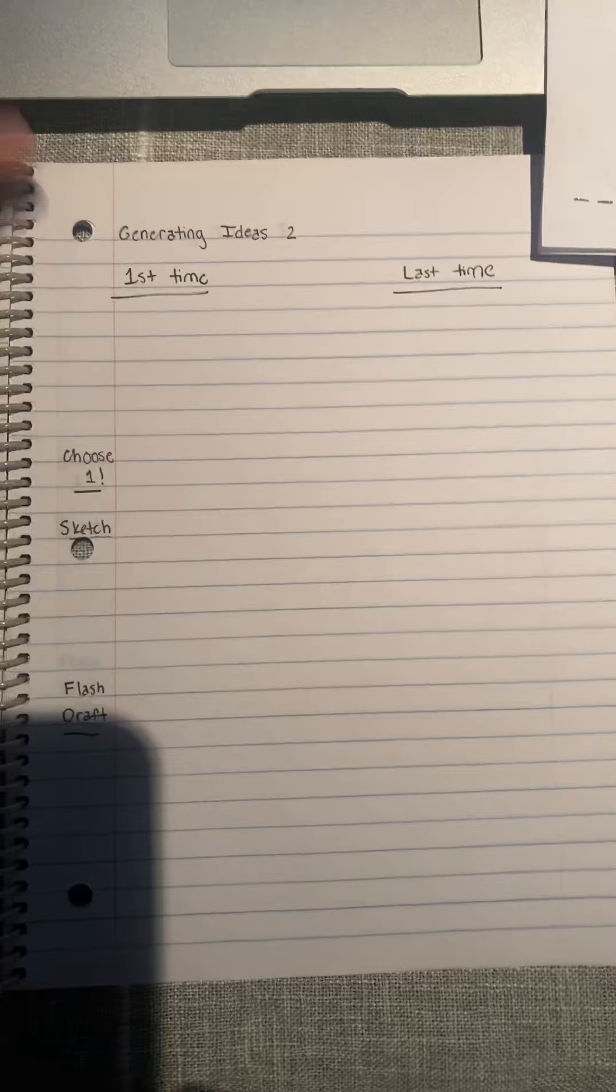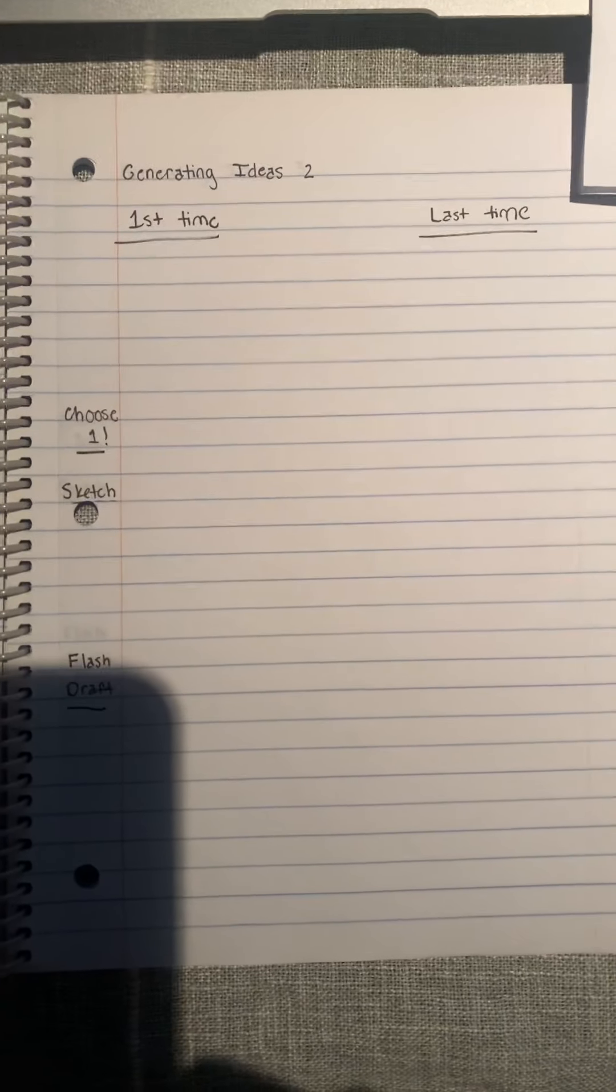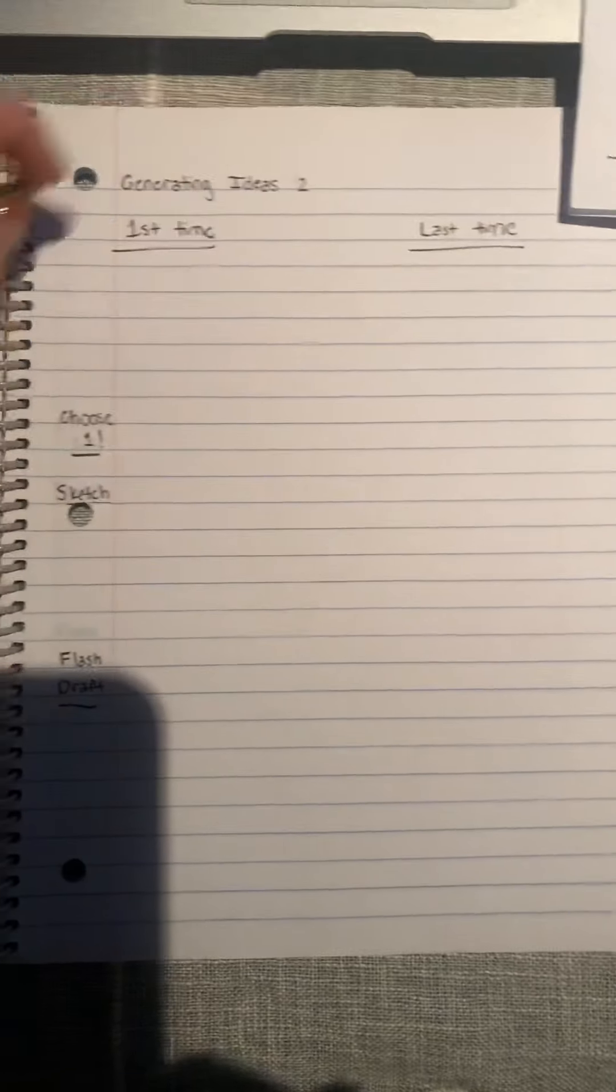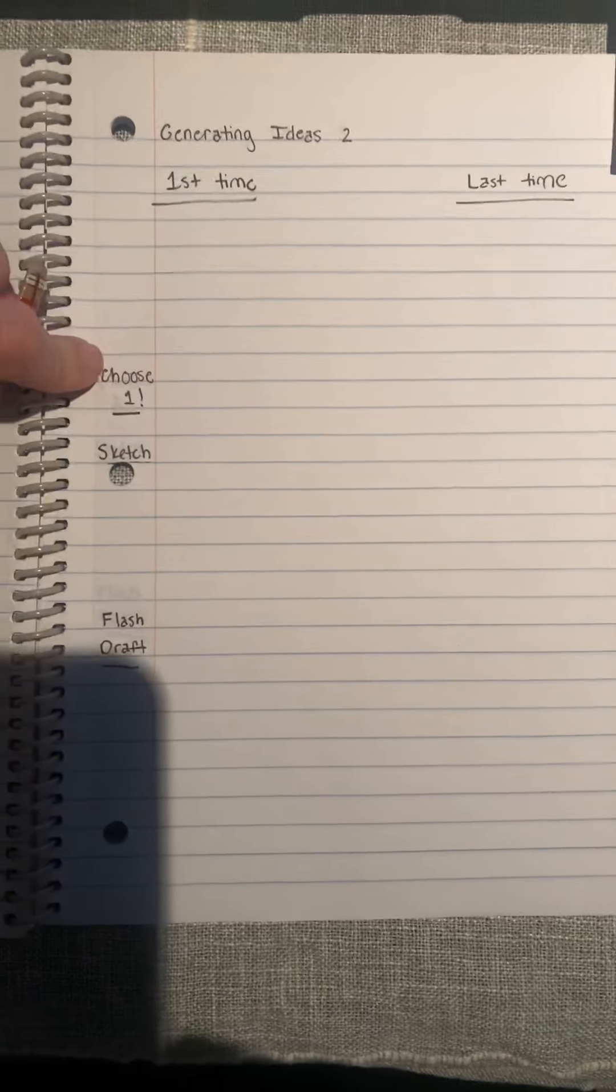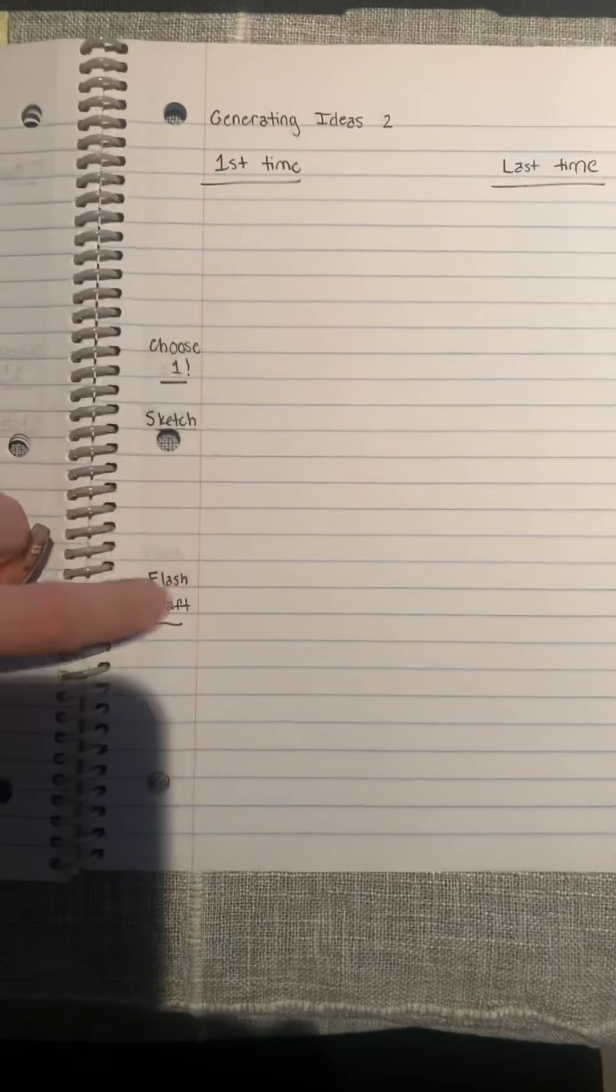So what I did in my notebook, which might be how you want to set it up, is just lists. Next day, generating ideas too. First time I did something, last time I did something, then I'm going to choose one, same as yesterday, sketch it, and flash draft.